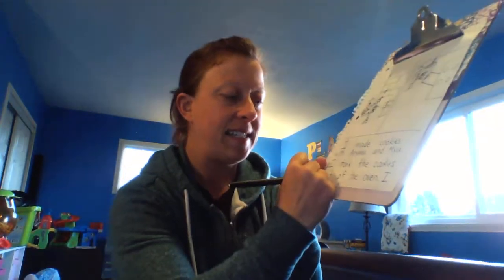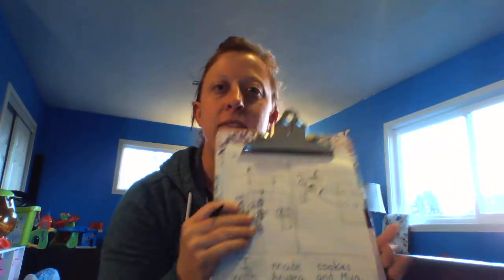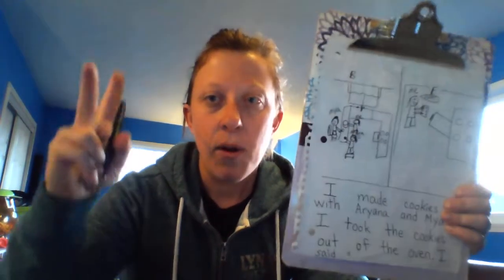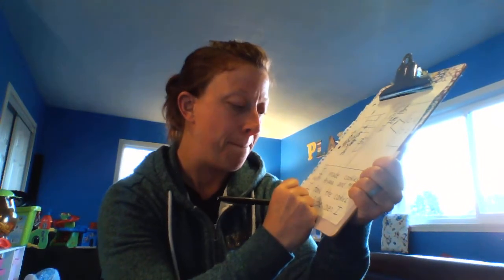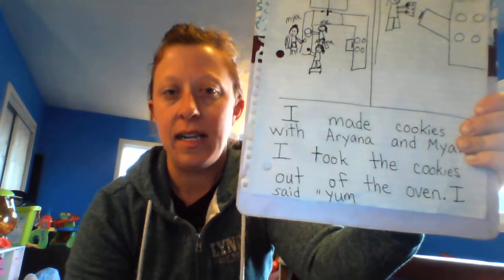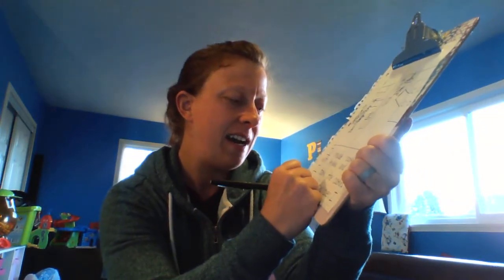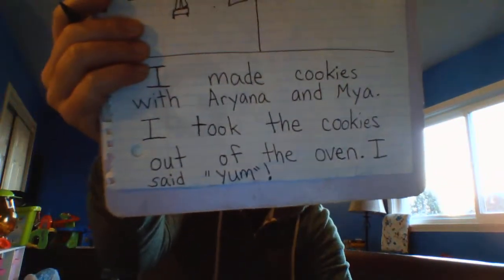I said — S-A-I-D. I said, do you remember some of our classes we've talked about this? What are those things around the word called? There's two lines together — quotation marks. Yeah. I said yum. What kind of punctuation is going to go at that word? Yum — exclamation mark. I said yum! There we go.